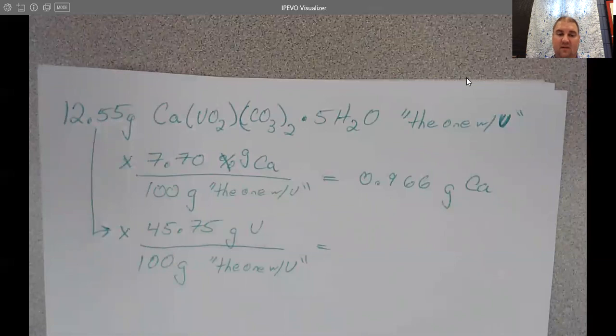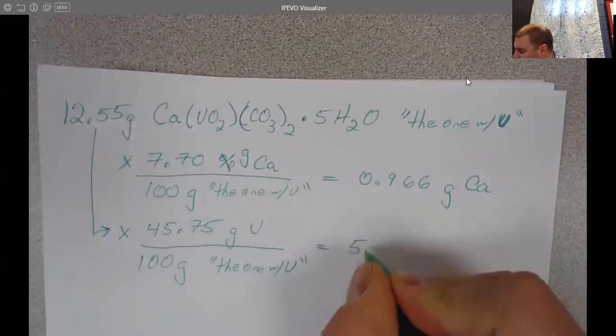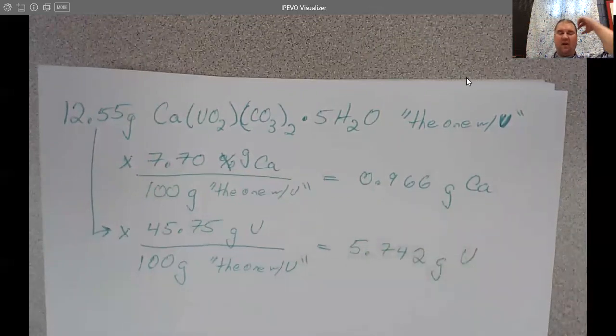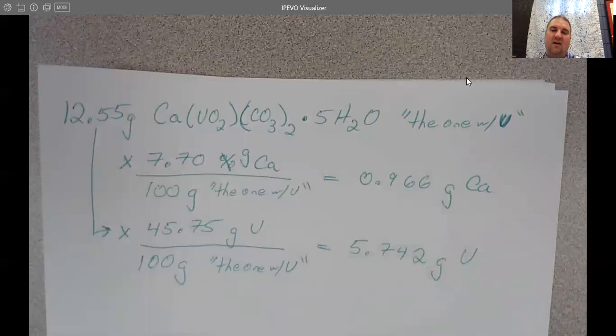So again, on the calculator, 12.55 times 45.75 divided by 100. So in this, there are 5.742 grams of uranium. Now I'm going ahead and going to the fourth significant figure because there were four significant figures in my mass percent.